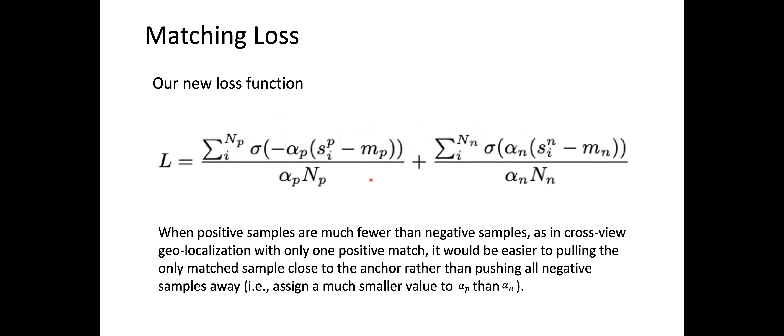In our paper, we introduce a new loss function with two coefficients, alpha_p and alpha_n, for positive and negative samples, and two margins, MP and MN, for positive and negative samples. This gives more flexibility to control how we push negative samples far away or pull positive samples close. Since in cross-view geolocalization there is only one positive match, it's easier to pull the single positive sample close to the anchor rather than pushing all negatives away. So we can assign a smaller value to alpha_p than alpha_n.